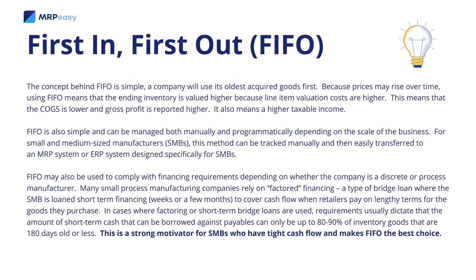The concept behind First In, First Out, or FIFO, is simple: a company will use its oldest acquired goods first. Because prices may rise over time, using FIFO means that the ending inventory is valued higher because line-item valuation costs are higher. This means that the cost of goods sold is lower and gross profit is reported higher, which also means a higher taxable income. FIFO is also simple and can be managed both manually and programmatically, depending on the scale of the business.